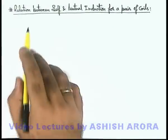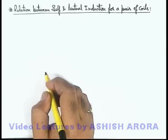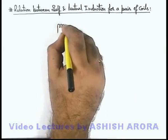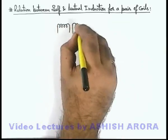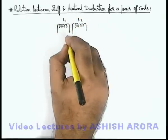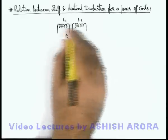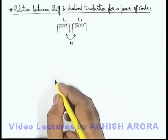Let us now study the relation between self and mutual induction for a pair of coils. Say if we are given two coils which have their self inductions L1 and L2, and for the two coils their mutual induction coefficient for this pair is defined as M.